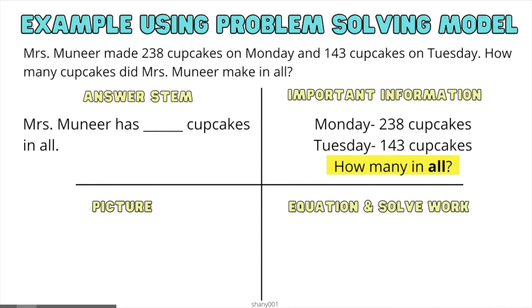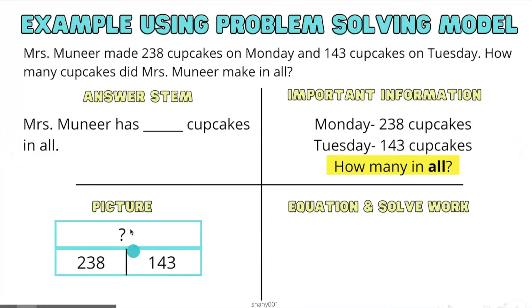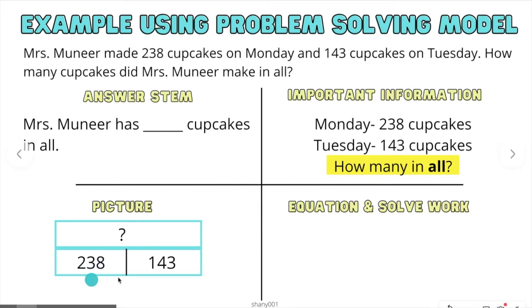What do I know? I know that on Monday she had 238 cupcakes, and on Tuesday she had 143 cupcakes. How many in all? How can we show a picture model? This is a great way to show a picture model of what 'how many in all' looks like. We have part plus part equals whole. So we need to find the whole number. We have 238 plus 143, and this right here tells us what that equals — the total amount.